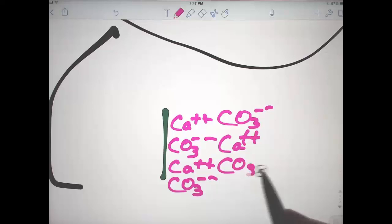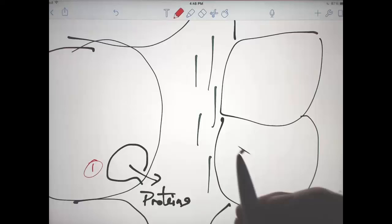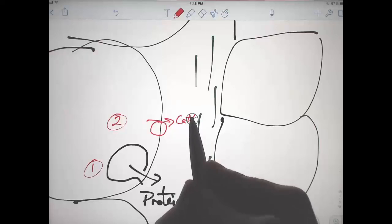The first step is production of these proteins that form the matrix around which the crystals will grow. Second, we need calcium pumps that will move calcium using ATP and accumulate calcium.